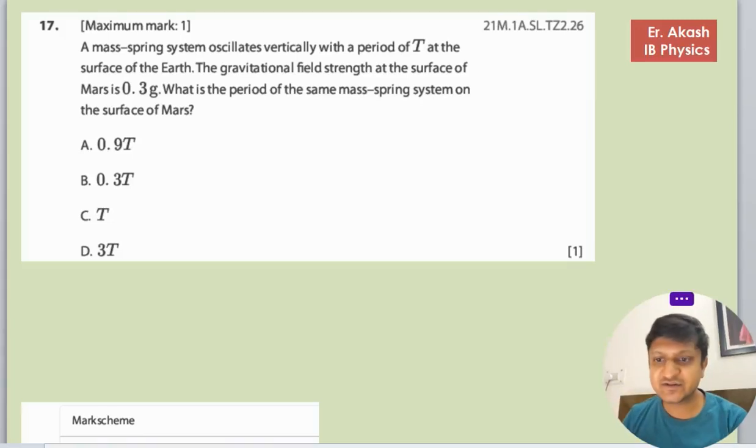So there's another question and the question says that a mass-spring system oscillates vertically with the period of T at the surface of Earth. So there is a surface of Earth so that oscillation time is T.